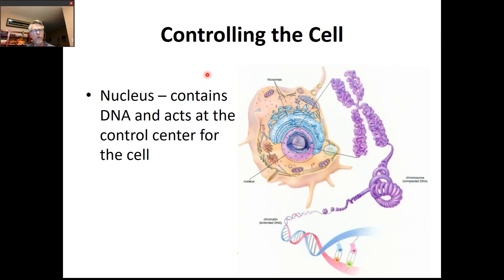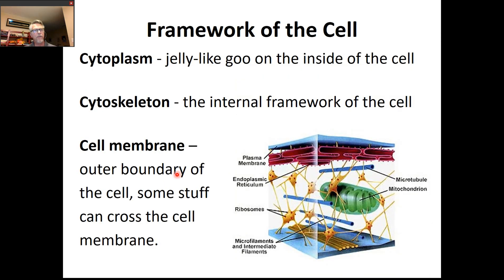The nucleus is an organelle found inside eukaryotic cells where the DNA of a cell is contained. We like to think of the nucleus as the control center — it directs the actions of the cell. There are three components of the cell's internal structure. First is cytoplasm — it's like the jelly filling inside a jelly-filled donut, a goo inside the cell. Sometimes you'll see it referred to as cytosol, but cytoplasm is the more correct term. It's a liquid where lots of important reactions take place.